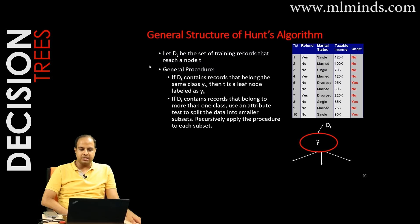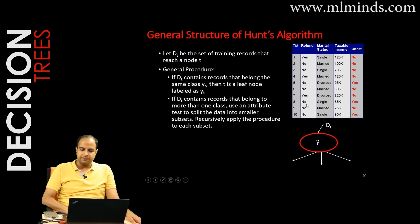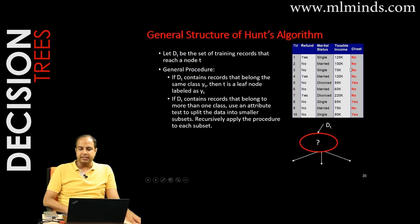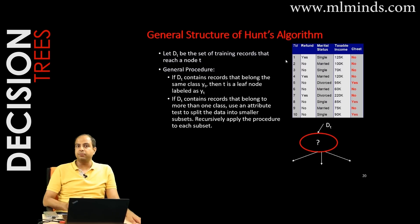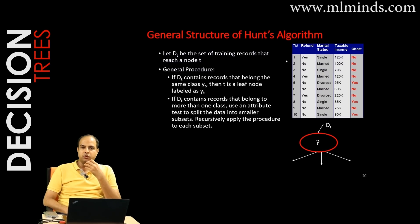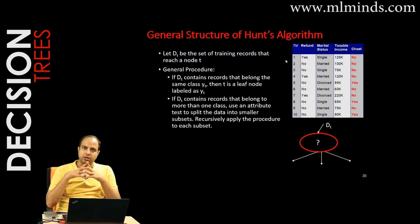In Hunt's algorithm, you start with all the training instances — say ten different training instances — and you want to predict whether a person cheats or not while filing a tax return. When building a tree, you start from the root node and figure out which attribute you want to split on at the root.